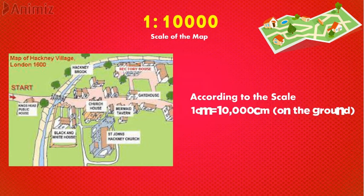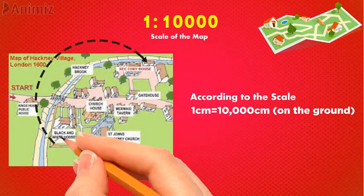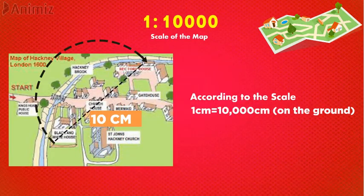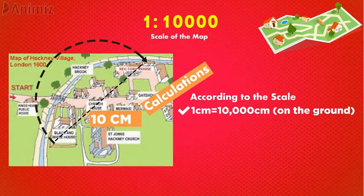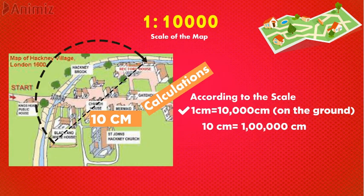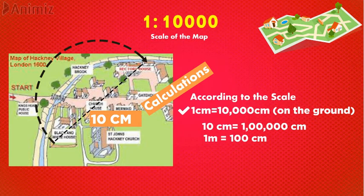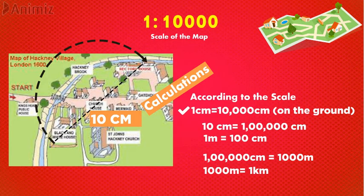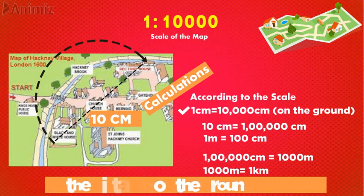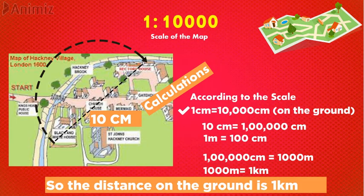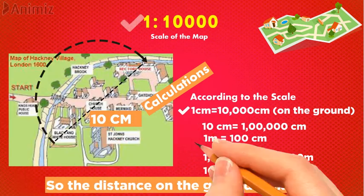According to the scale, one centimeter on the map is equal to ten thousand centimeters on the ground. Suppose we want to travel from one area to another and the distance on the map is ten centimeters. If one centimeter equals ten thousand centimeters, then ten centimeters equals one lakh centimeters. Converting to meters: since one meter equals one hundred centimeters, one lakh centimeters equals one thousand meters, which is one kilometer. So the actual distance on the ground is one kilometer. In this way, we can find the actual distance using the map scale.